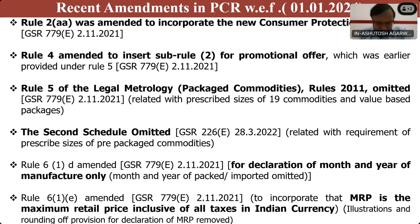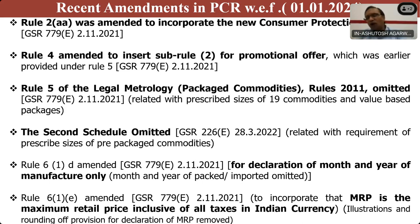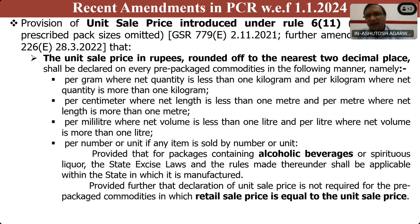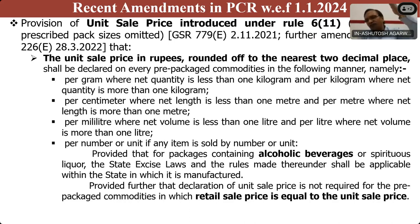The declaration will be for month and year of manufacture as already explained — packing and import dates are no longer allowed. The last and very important point is: MRP has to be declared in Indian currency. The rounding-off provision has been removed since we only have the 50-paise coin now. For unit sale price, the provision is very clear — it has to be rounded off to the nearest two decimal places as per rounding-off rules. For example, if it is more than five...